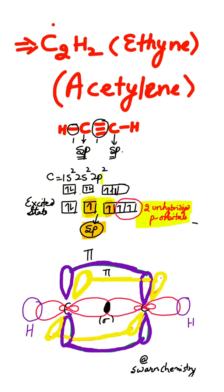Now let's discuss the structure of C2H2, also known as ethyne or acetylene. Carbon is sp hybridized in this structure. Both carbons are sp hybridized. This is the ground state electronic configuration of carbon.